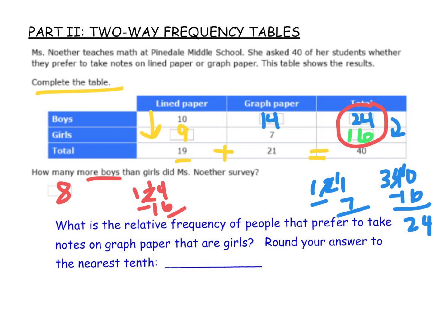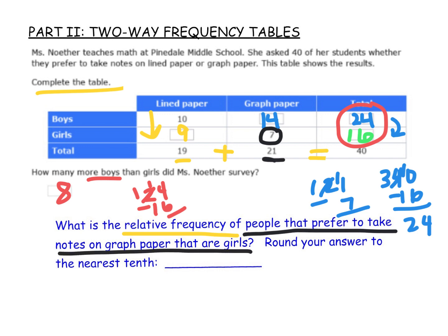Then we have to do what's called relative frequency — that is the part over the total. We want to know: what is the relative frequency of people that prefer to take notes on graph paper that are girls? I see that 7 of them are girls. We have 21 people who prefer to take notes on graph paper, and 7 are girls — so 7 out of 21. We're going to round to the tenths place, so I'm grabbing my calculator and doing 7 divided by 21. I get 0.333 repeating, which rounds to the tenths place — one place past the decimal — so our answer would be 0.3.